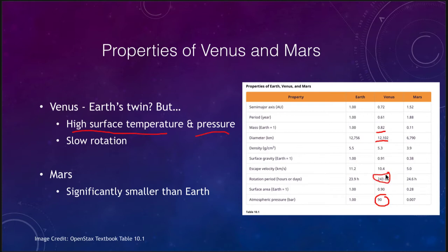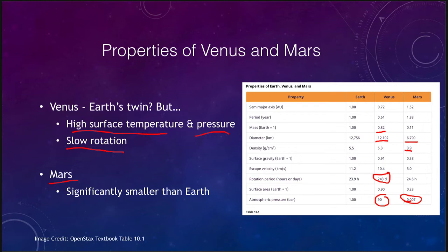Another difference for Venus is its rotation — its rotational period is 243 days, giving it a very long day-night cycle. Mars, on the other hand, is more Earth-like in many ways because it does not have a high surface temperature and pressure; in fact its pressure is very low, much too low to breathe even if it had oxygen. Mars is nearly half the size of the Earth, has a lower density showing a higher concentration of rock and less metal, and lower surface gravity. However, the day on Mars is just about the same as a day on Earth — about 24 and a half hours versus about 24 hours here. The big difference with Mars is that it is significantly smaller and has lost its atmosphere.